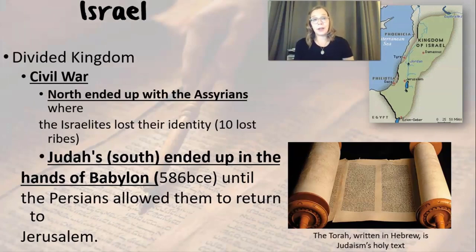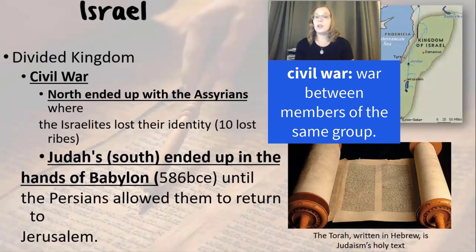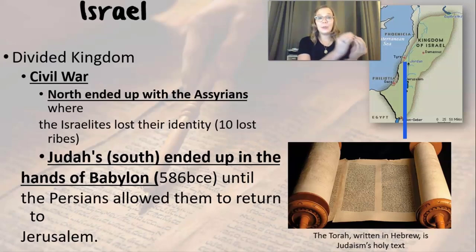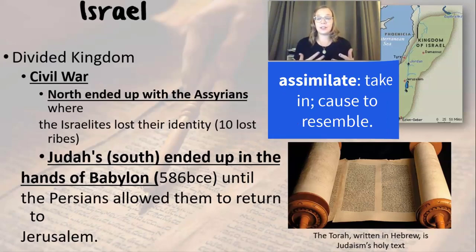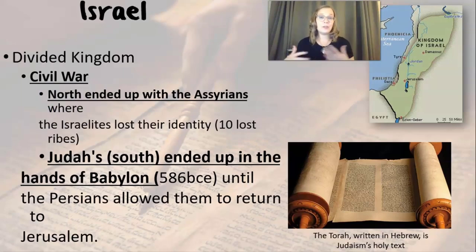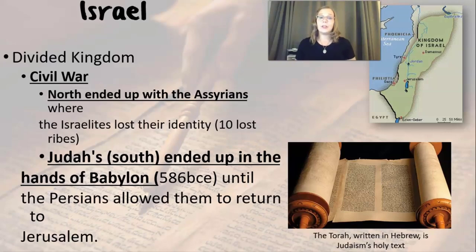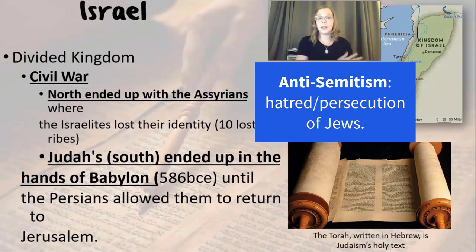After a while, Israel becomes divided because of a civil war. The northern part of Israel ends up with the Assyrians, where 10 of the tribes are separated into Assyria and they sort of lose their identity because they assimilate — adopting Assyrian religious ideas and lifestyle and losing their culture. The southern part of Israel becomes known as Judah, and they end up in Babylon, taken over by the Babylonians. The Jews from the beginning have had a history of being enslaved and taken advantage of as a people.